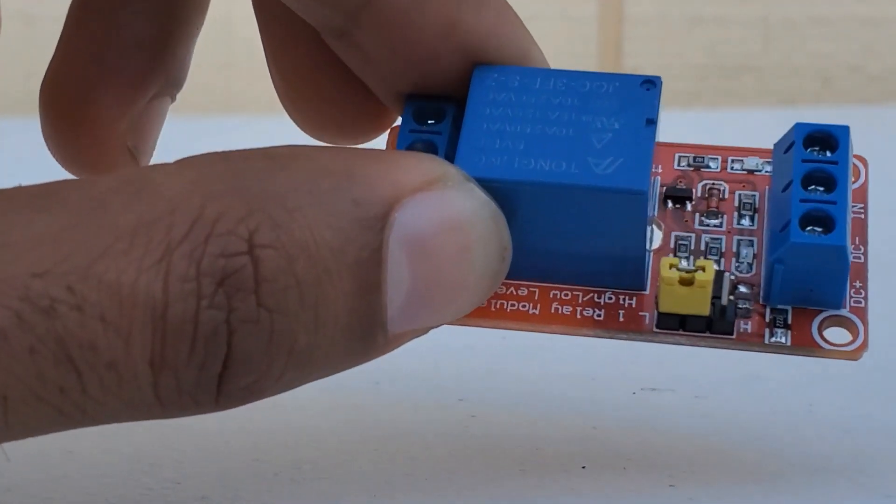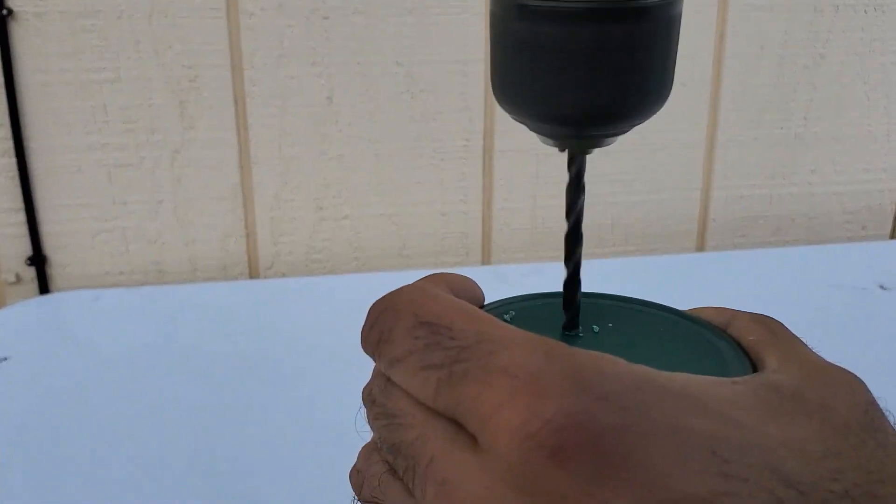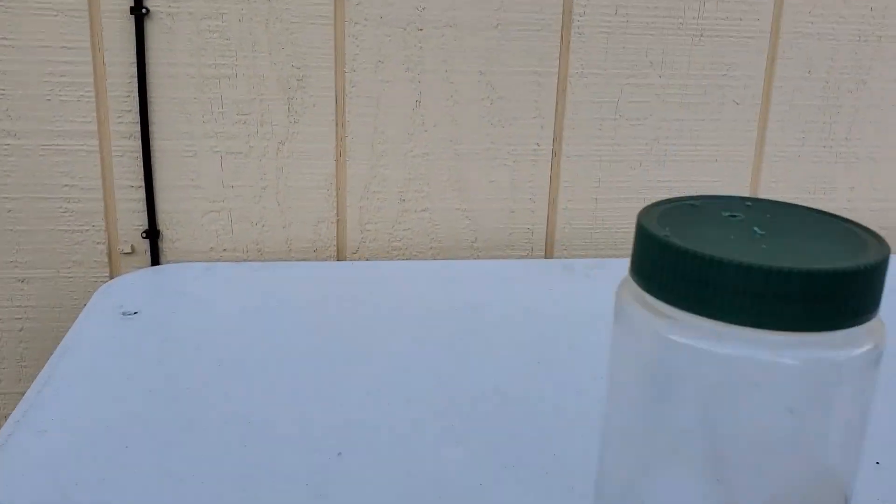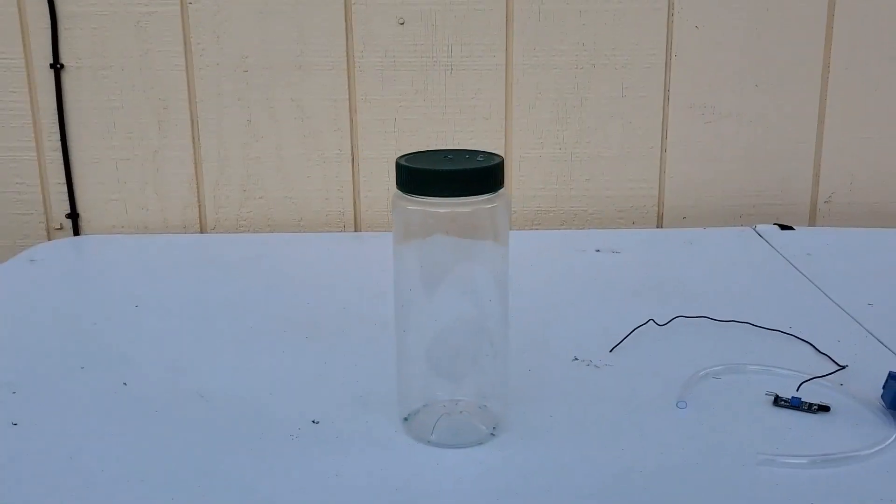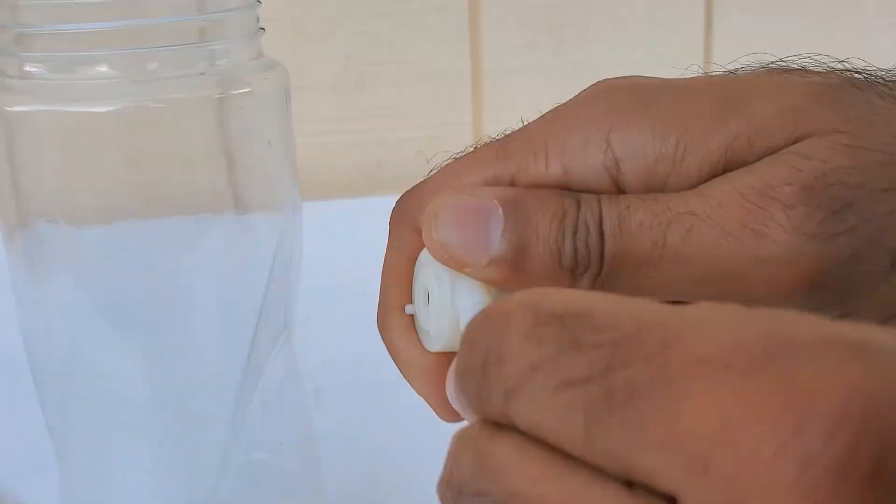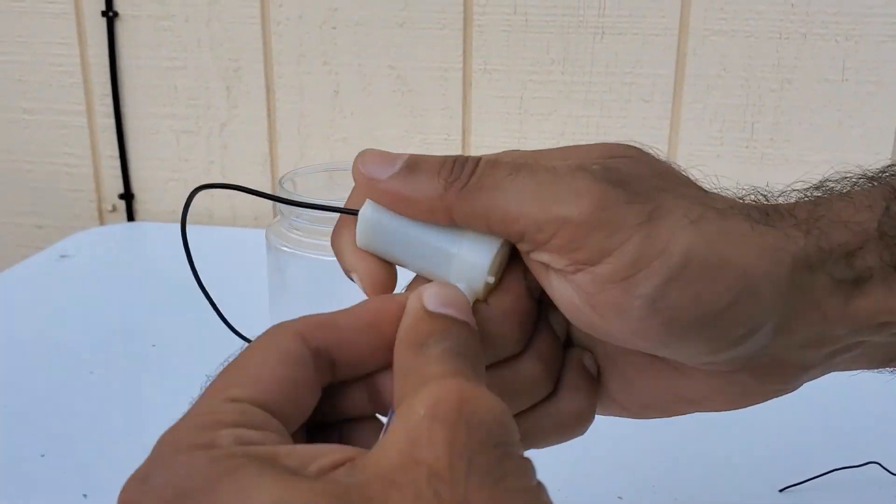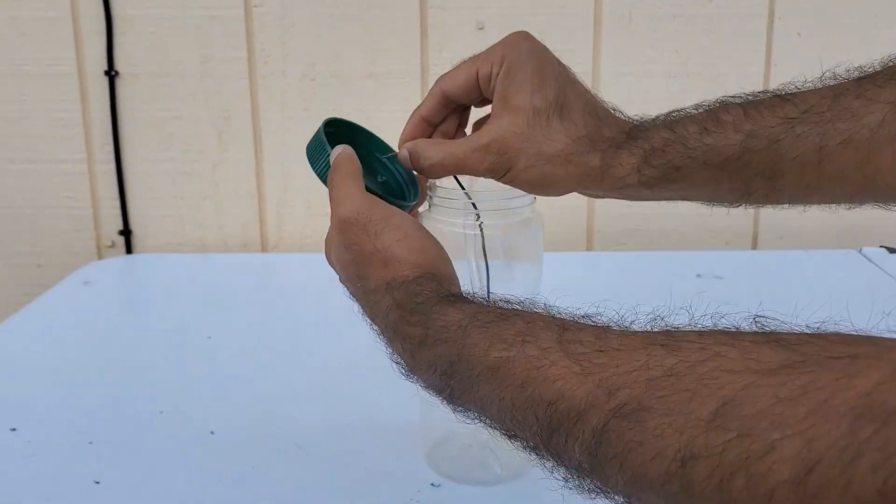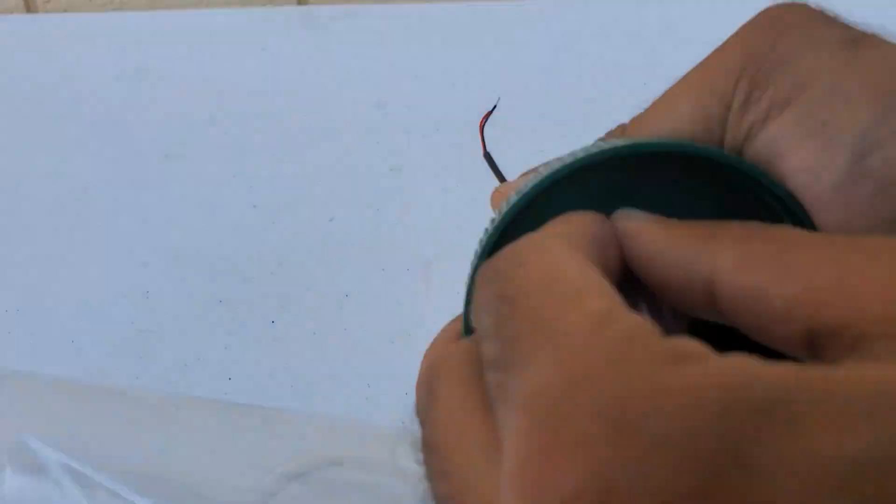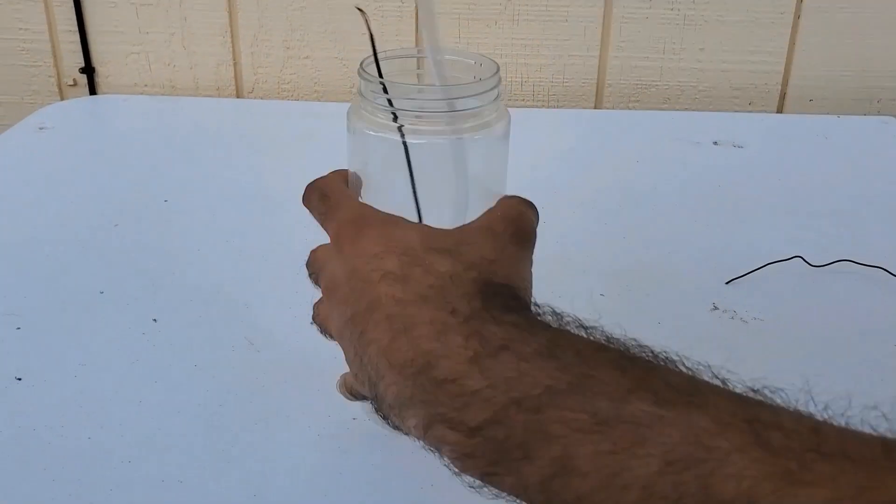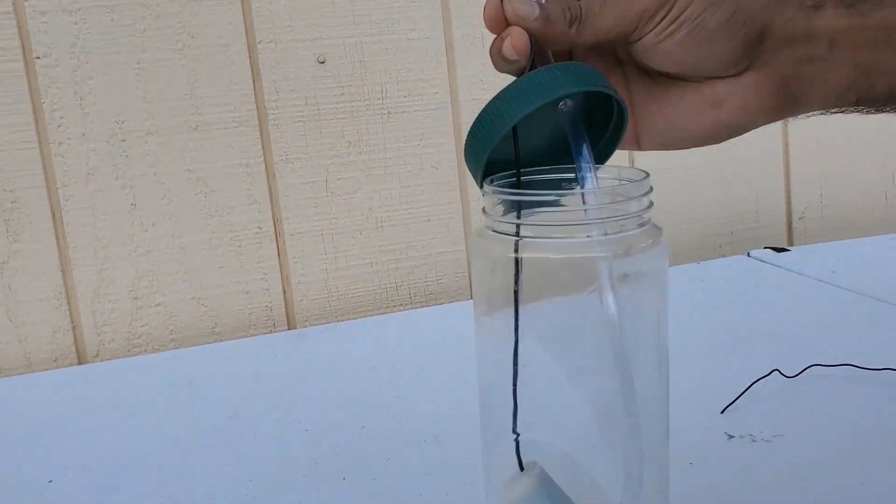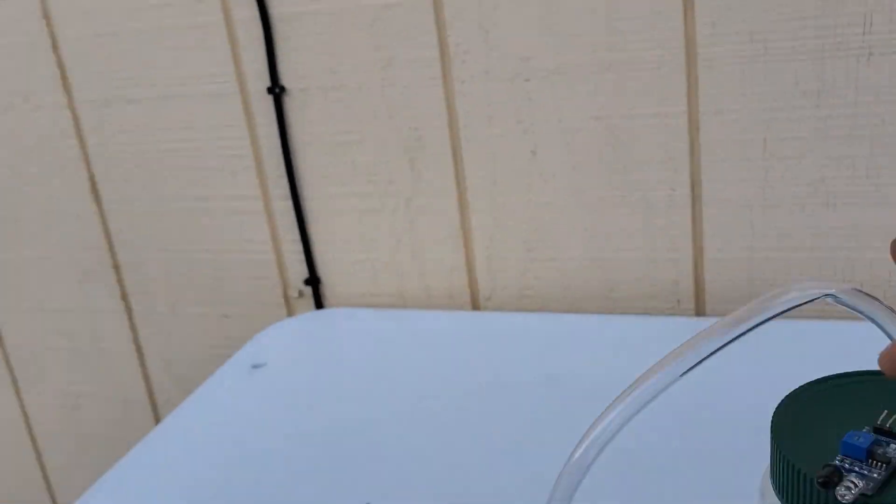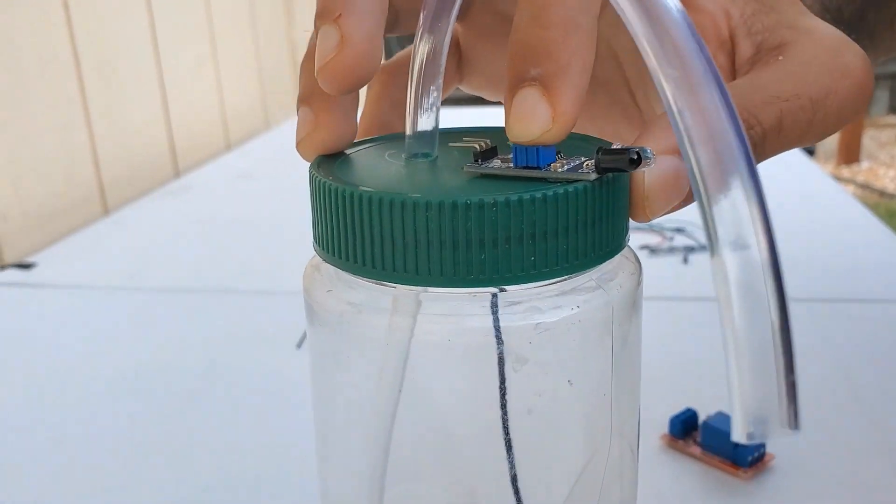To start making this dispenser, you need to drill two holes on the top of the lid, and then hook the tubing to the pump and pull the wire through one hole and the tube through the other. To mount the sensor, I use some super glue, and for the relay module I use some screws.